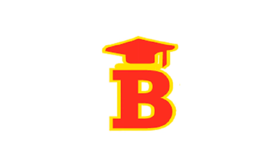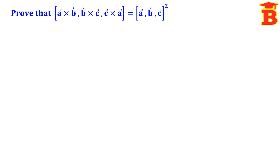Welcome to our channel Bright Mass. In this video, we are going to prove the vector result: box product of (A×B, B×C, C×A) is equal to box of (A, B, C) whole square.